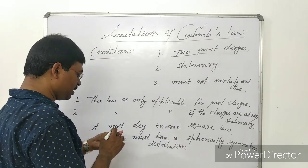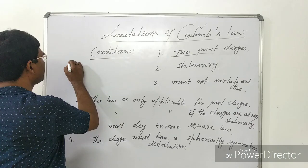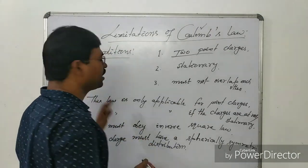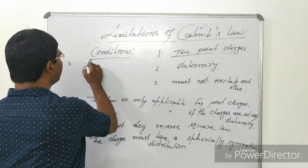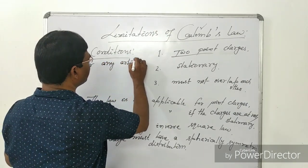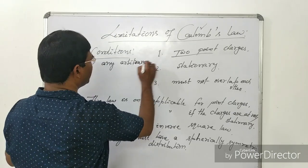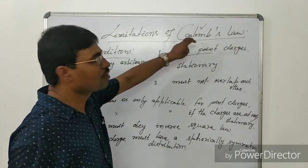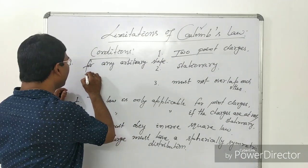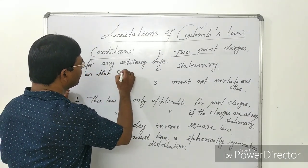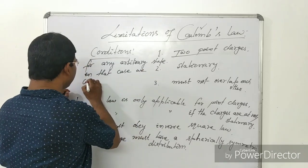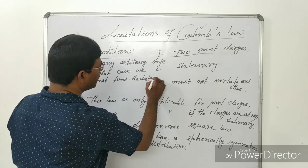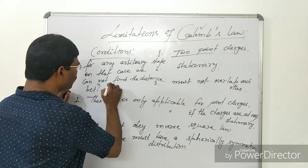The fifth point is the most important: if the charges are distributed in any arbitrary shape, it is very difficult to apply Coulomb's Law, because in that case we cannot find the distance between the two point charges.